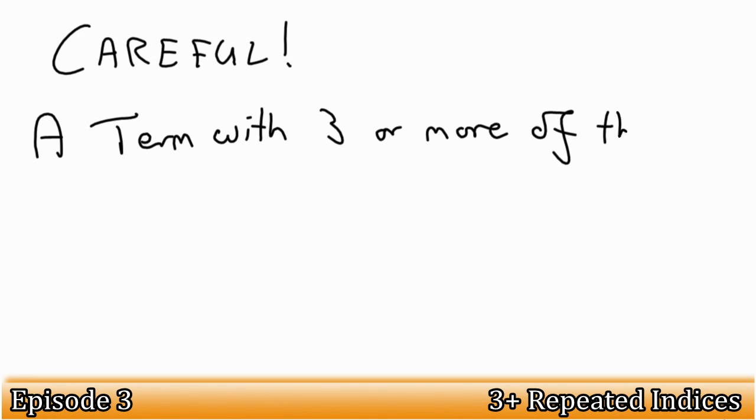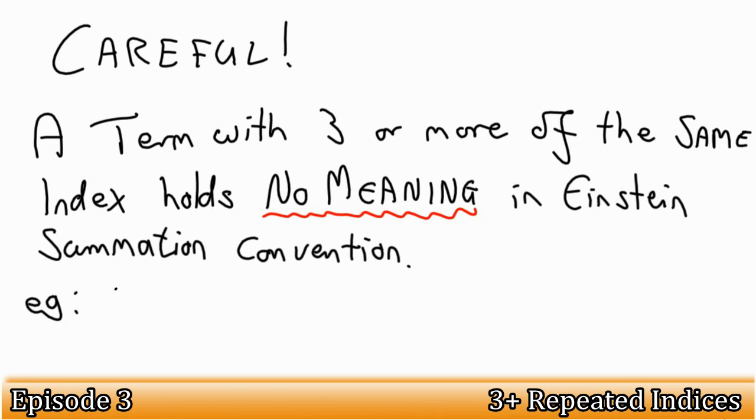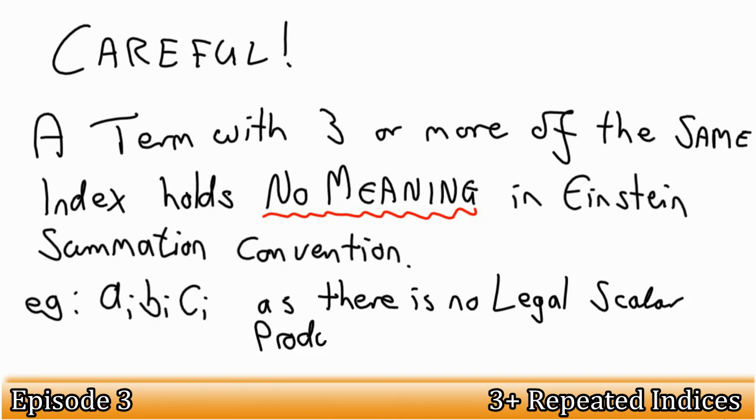Finally, it's just worth noting that, in Einstein's summation convention, a term with an index that appears more than twice holds no meaning. For example, Ai Bi Ci doesn't mean anything, as one cannot apply the scalar product to three vectors. It only works for two of them.